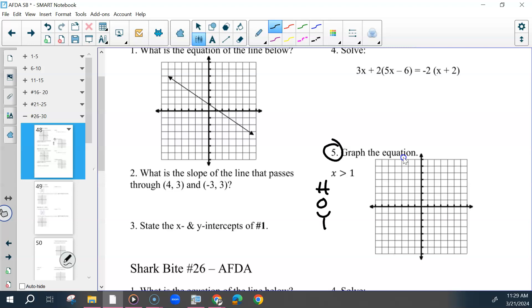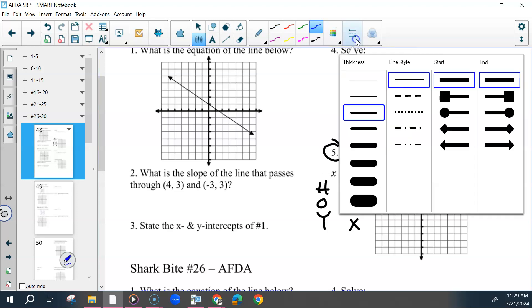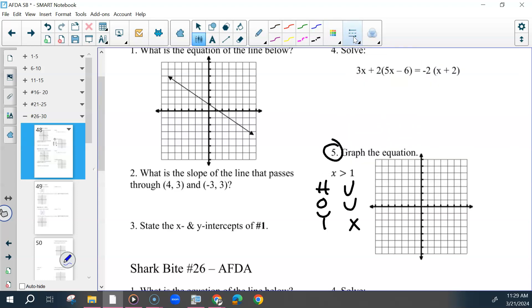If we're thinking about our void laws, it is an X inequality. So that would be a vertical line at 1, and that would be dashed. And everything shaded to the right. So that would be X is greater than 1.